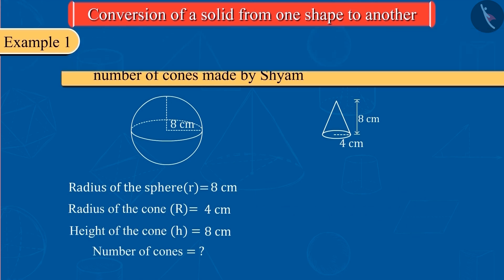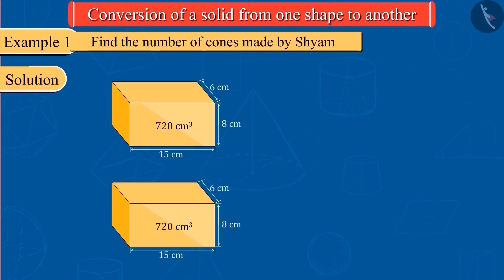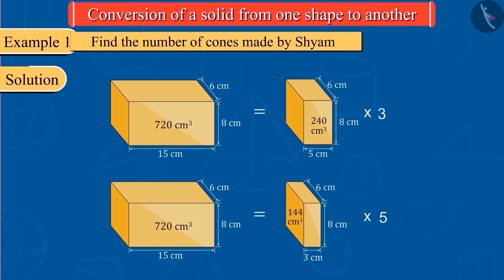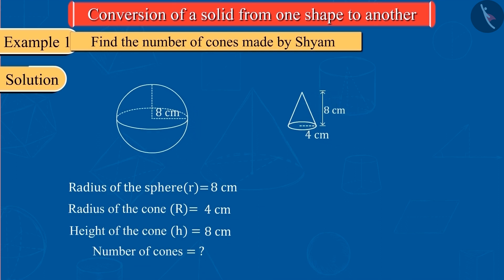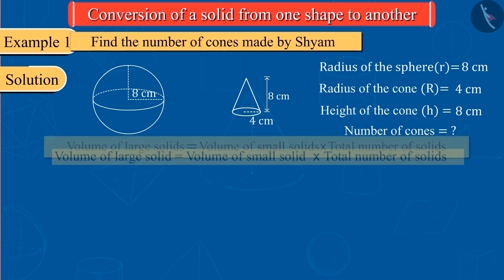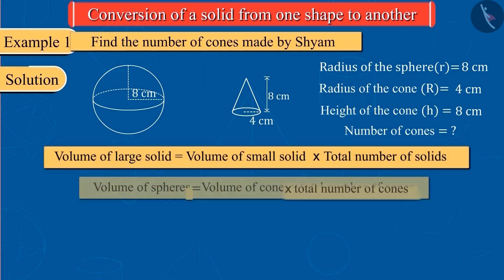We learned in the previous video that if a solid is converted into smaller solids of equal measure, the product of the volume of the smaller solids and the total number of smaller solids equals the volume of the larger solid. Here, we have a large solid sphere and small solid cones. Therefore, we can write this statement as follows.